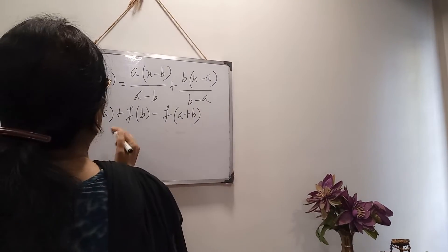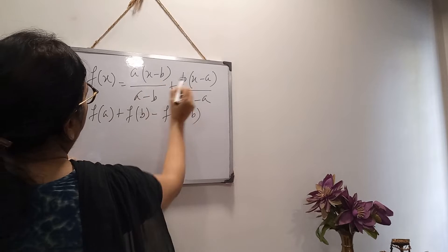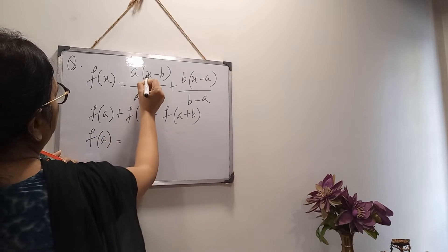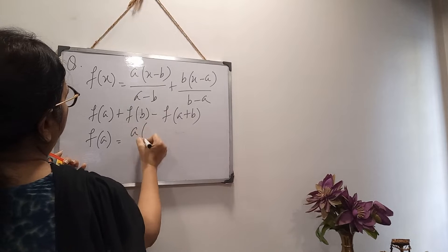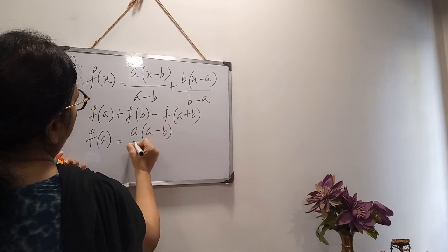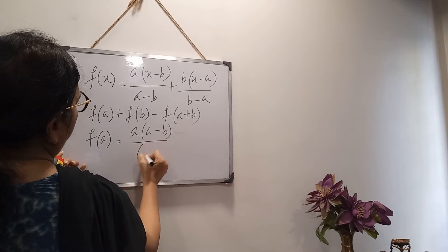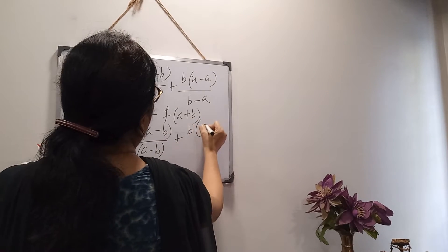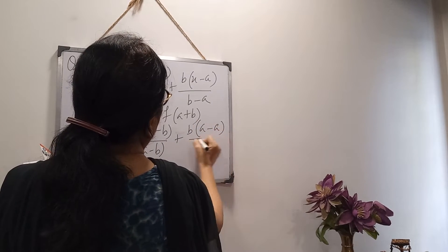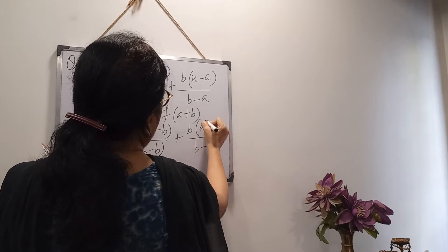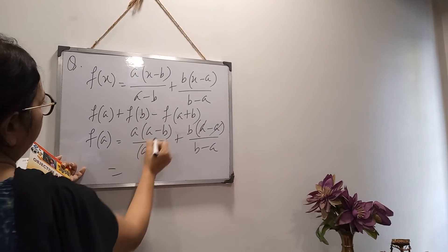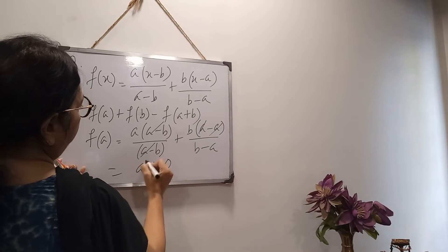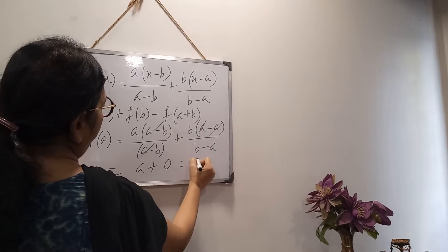Now separately I will find out. f(x) is given. First I will calculate f(a) — if it means in place of x we put a. So wherever x is, I put a there. This is cancelled out, and this is a minus b minus a, and b into 0 means 0. So f(a) equals a.